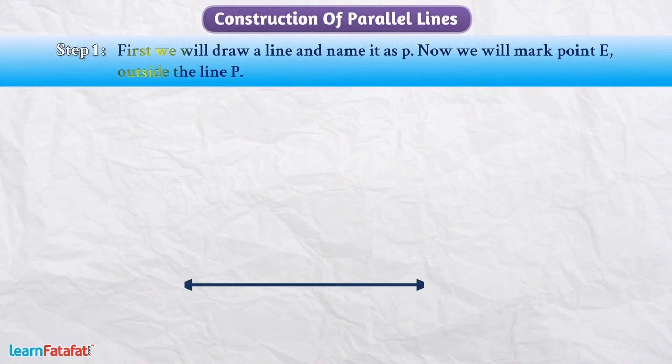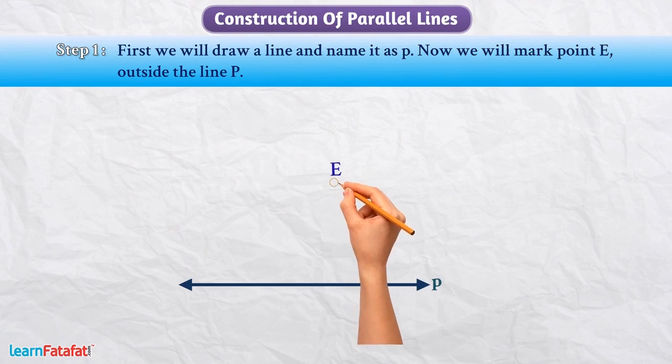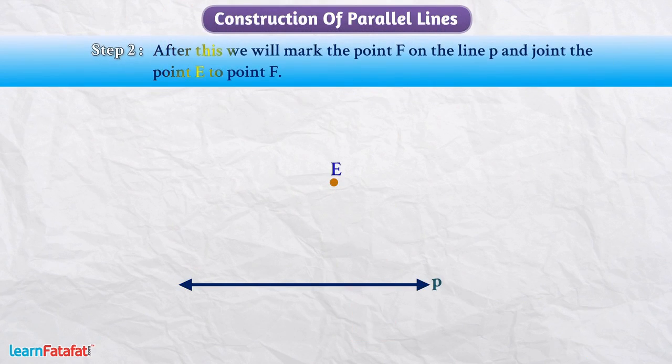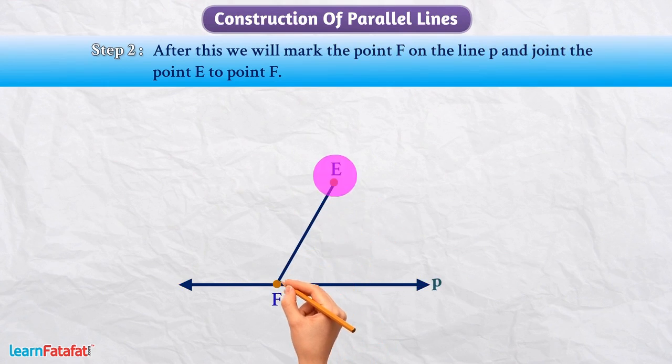First, we will draw a line and name it as P. Now, we will mark point E outside the line P. After this, we will mark the point F on the line P and join the point E to point F.